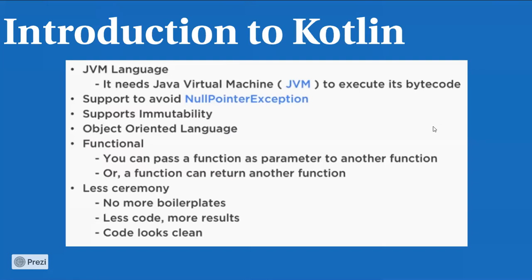Immutability support means you can declare values inside Kotlin as either values or variables. When you make a declaration, you indicate whether it is a fixed constant or whether the value will vary. If you declare a variable, then it can change. But if you declare a value, then it is fixed — once you initialize it, it becomes a constant and you can't change it.